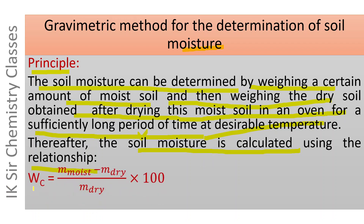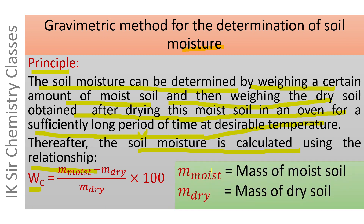The formula is: water content of soil = (M_moist − M_dry) ÷ M_dry × 100, where M_moist is the mass of moist soil and M_dry is the mass of dry soil. If these two masses are known, the water content of soil can be calculated.